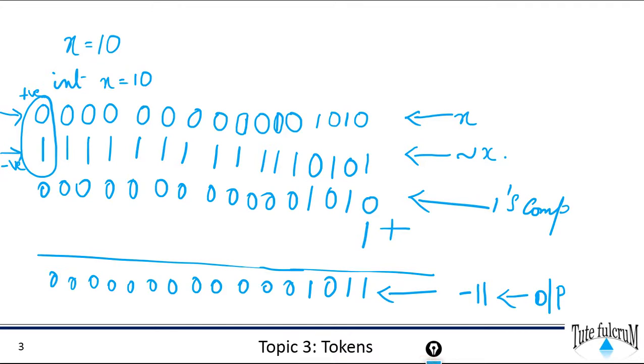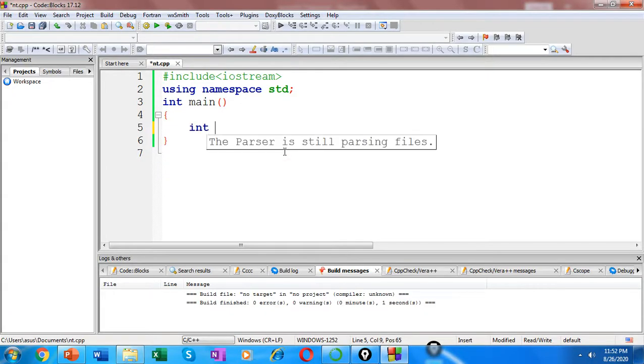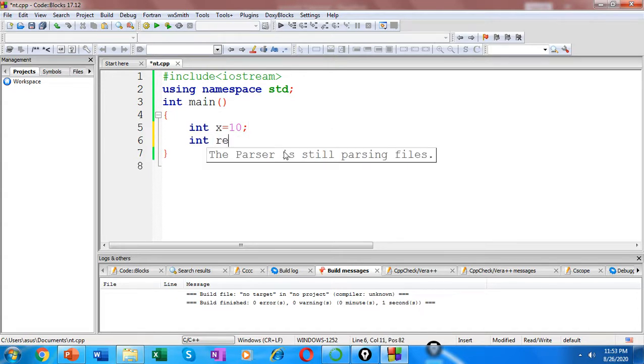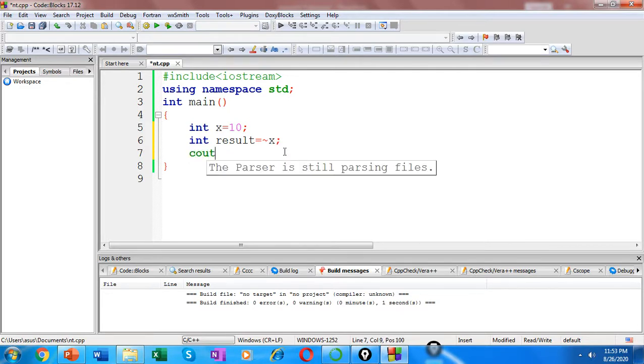Let's write a program and verify this. So int x our operand initialized with the data 10. Let's use a variable to store the data equal to NOT of x. We will use a cout statement to verify our result.